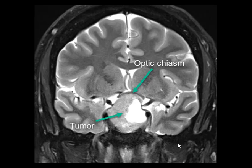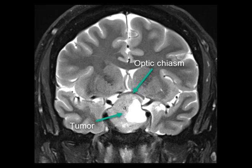Here is a T2-weighted coronal image of the tumor. The tumor is pictured here. There's a cystic component and a solid component. You can see why the optic nerve is affected on the coronal view.